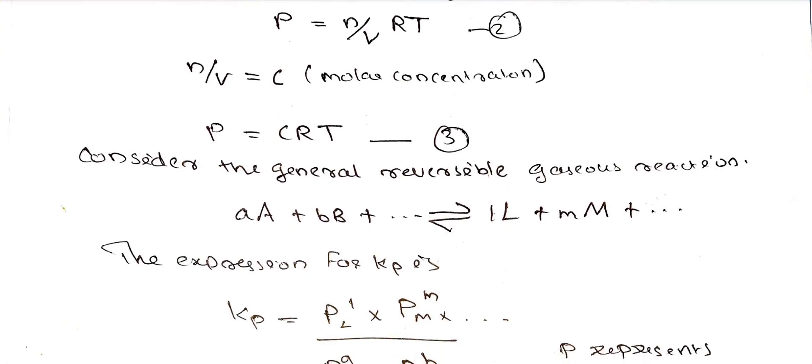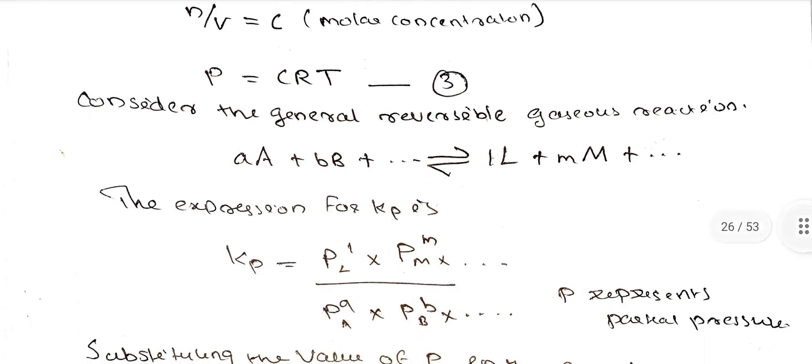We get the general equation: A plus B plus etc. gives L plus M plus etc. Now we get the Kp expression. The Kp expression in terms of pressure is the product of partial pressures of products divided by partial pressures of reactants.